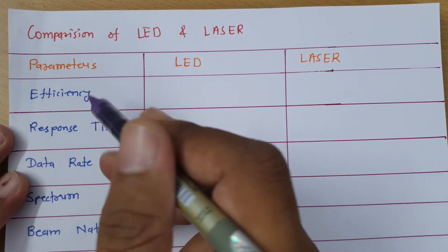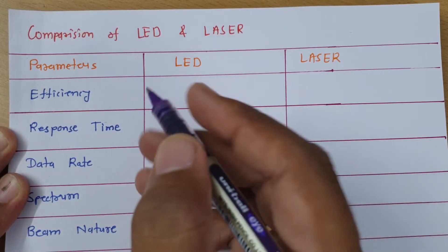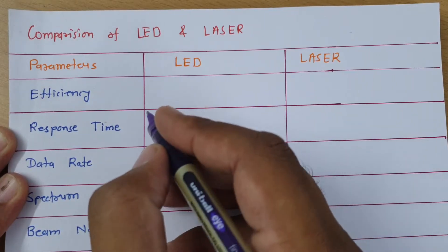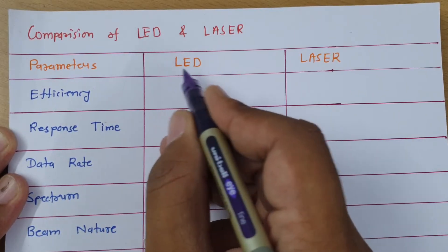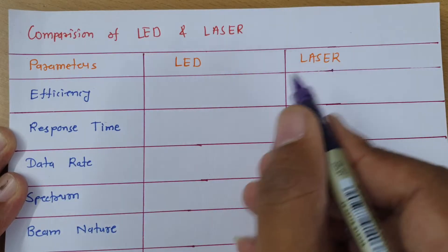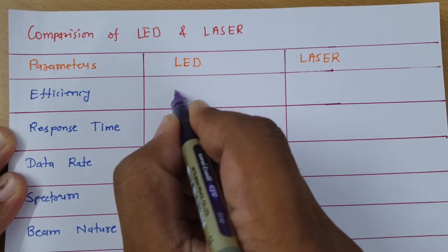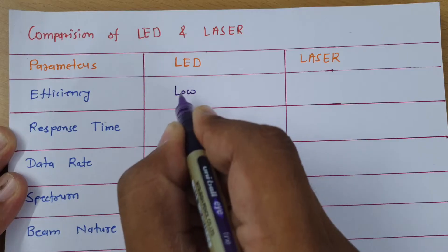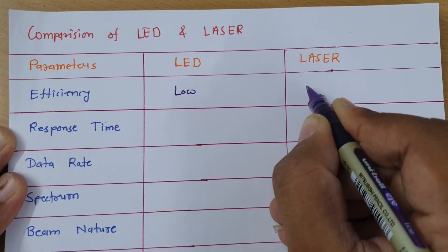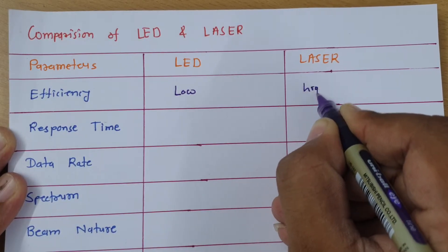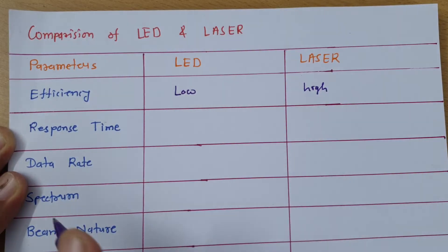When we talk about the first parameter — efficiency — LED has lower efficiency compared to laser, and laser has high efficiency compared to LED.